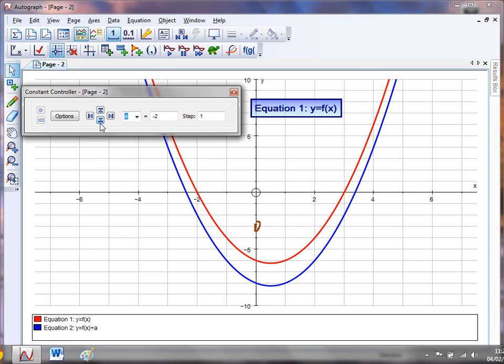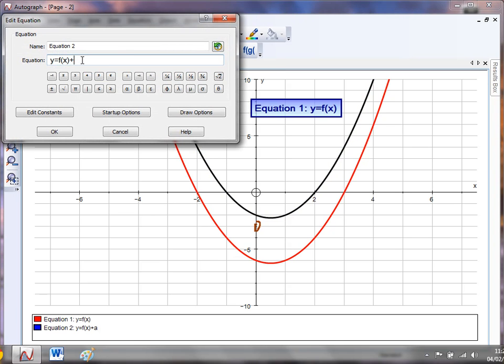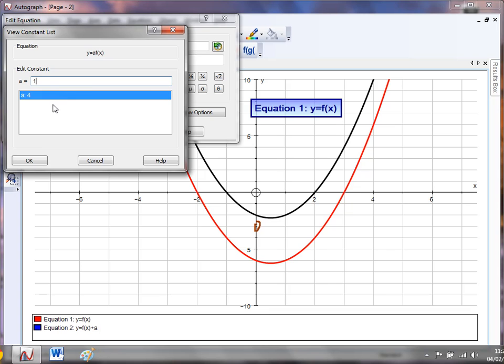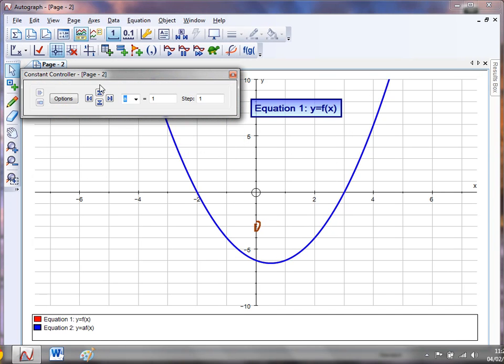Now of course you can set up any transformation this way, so if I give this a little click, instead of having f of x plus a, I could have a times f of x. I'm going to change my constant this time to one so nothing changes, so the blue curve should just sit on top of the red curve.